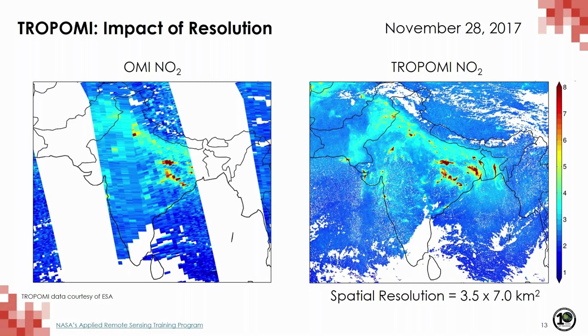TROPOMI NO2 data has a resolution of 3.5 by 7 km². Not only can you see these smaller sources, but in some cases you can actually see the plume being advected in the wind. It's really impressive — we're very excited.